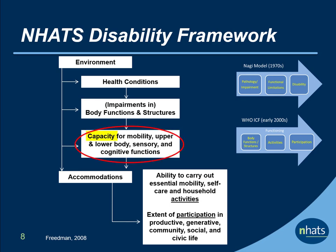In this approach, capacity is defined as an individual's physiological, cognitive, and sensory capabilities to carry out tasks that form the building blocks of activities. Accommodations capture behavioral responses to changes in capacity — in essence, how activities are carried out — and may include using assistive technology, changing the environment in which an activity is performed, changing the demands of the activity, reducing the frequency of an activity, and receipt of assistance from another person.